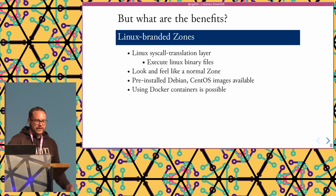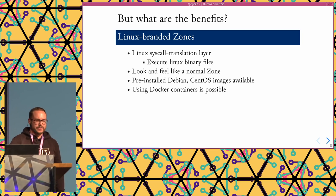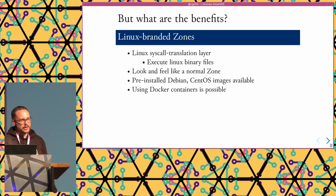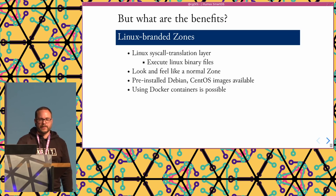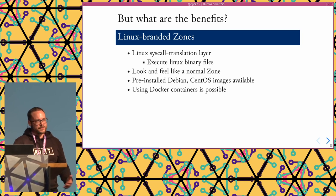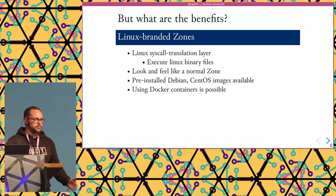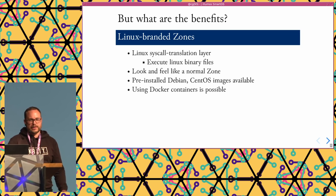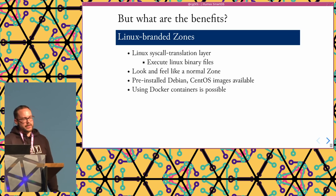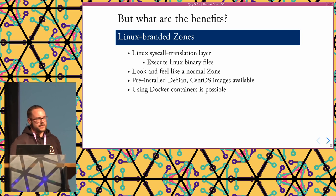There's a really nice branded zone called the Linux branded zone, or LX zone. It provides a Linux syscall translation layer, so you can run Linux binaries on top of SmartOS. These syscalls are translated to the Illumos kernel. It feels and looks like a normal zone, so you can use the same tools to manage both zone types. There are already pre-installed images available — for example, Debian, CentOS, Void Linux, and so on. It's also possible to run Docker on top of SmartOS based on these Linux branded zones.